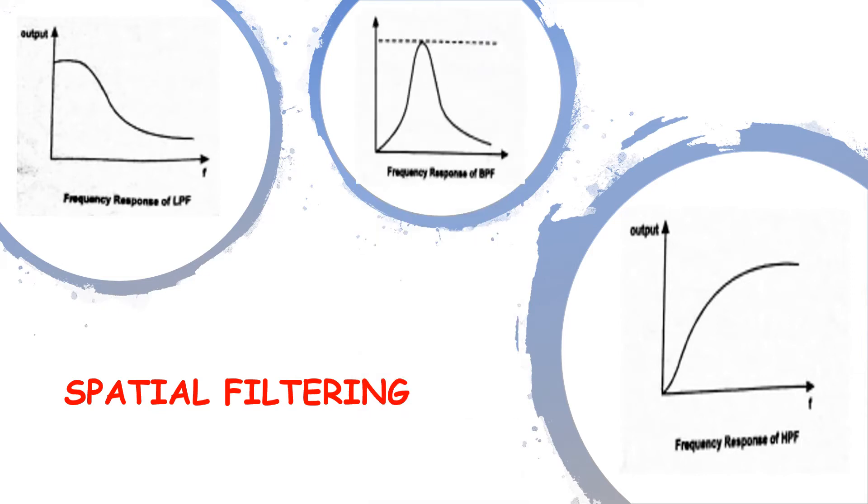The third type is a band-pass filter, which removes selected frequency regions between the low and the higher frequencies. These filters are used for image restoration and are seldom of interest in image enhancement.